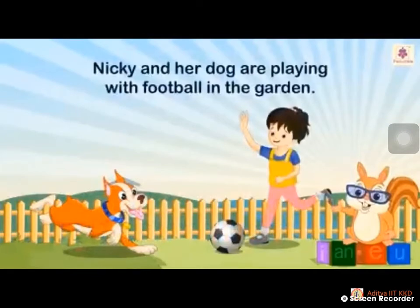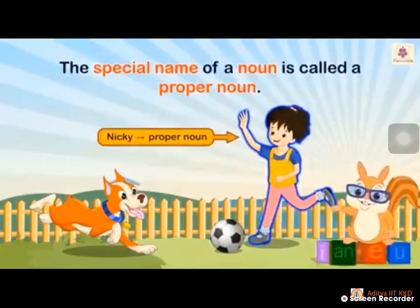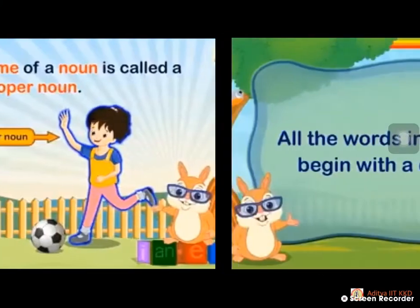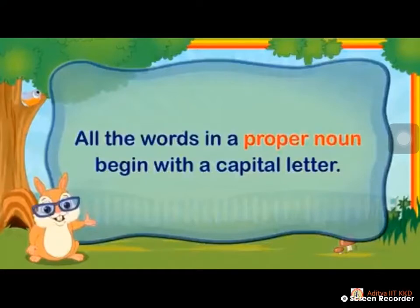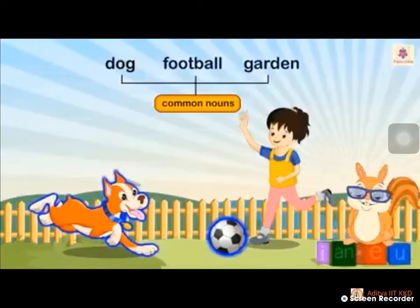Example: 'Nikki and her dog are playing with football in the garden.' The special name of a noun is called a proper noun. Nikki — they have mentioned the girl's name. They did not say 'girl'; if they said 'girl' it would be a common noun. They mentioned the name Nikki, so it comes under proper noun. Common nouns in that example: dog, football, garden — name of an animal, thing, place — told in a general manner.